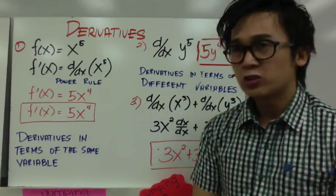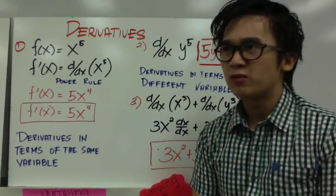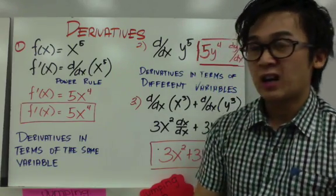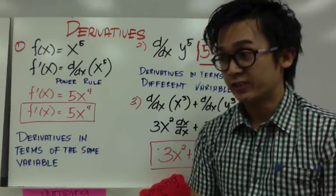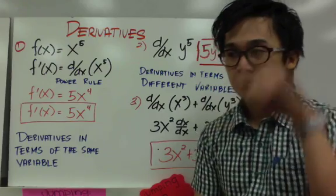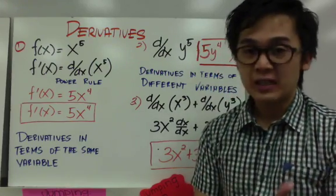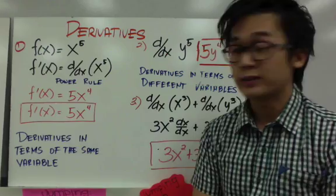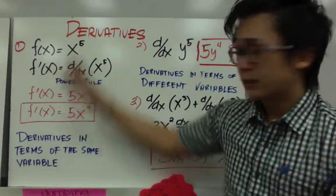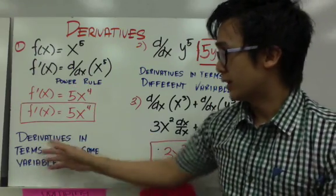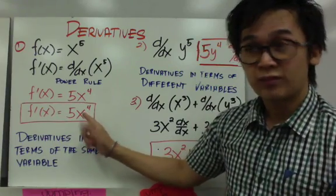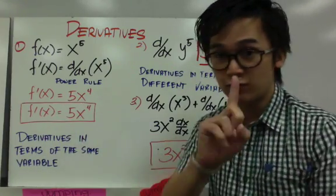Similar lang siya pagka logarithm of x — kung logarithm of x, alam nyo na na yung base niya is 10. O kung x squared, ang alam nyo na na yung coefficient niya is 1. At kung meron tayong square root, alam nyo na na meron siyang 2 dun sa radical sign, pero hindi na natin siya sinusulat. Similar dito sa power rule na x⁵ in terms of x. Itong type ng derivative na ito — power rule — is derivatives in terms of the same variable, kasi f(x), kinuha mo yung derivative ng 5x⁴ which is x lang. Isa lang yung variable na nakikita nyo.